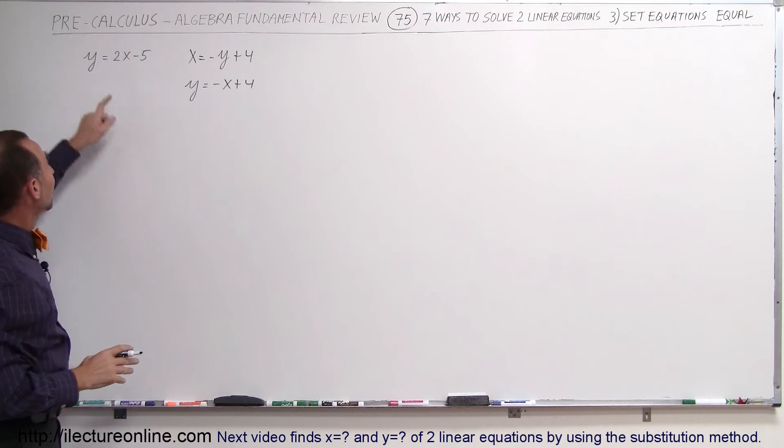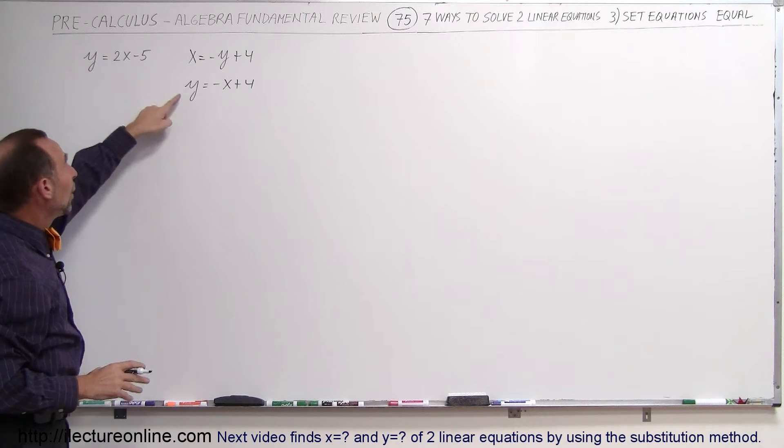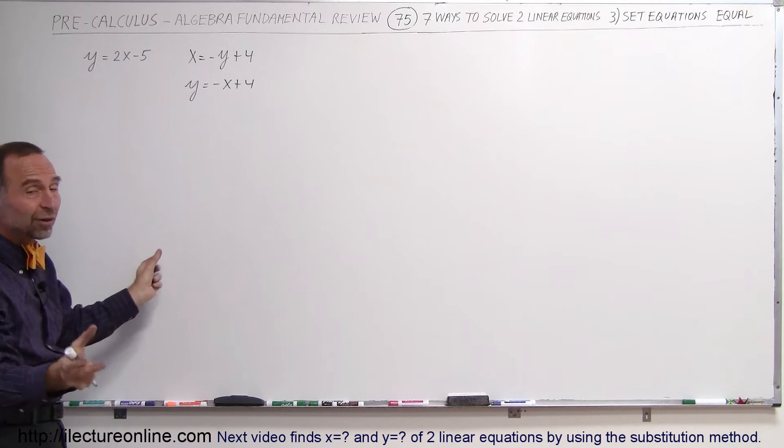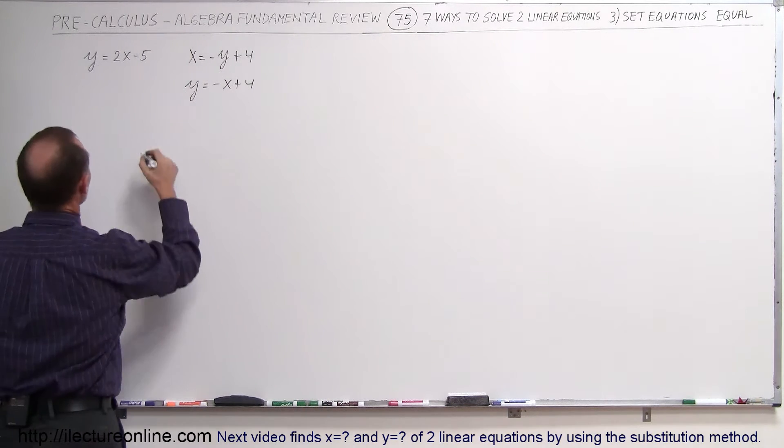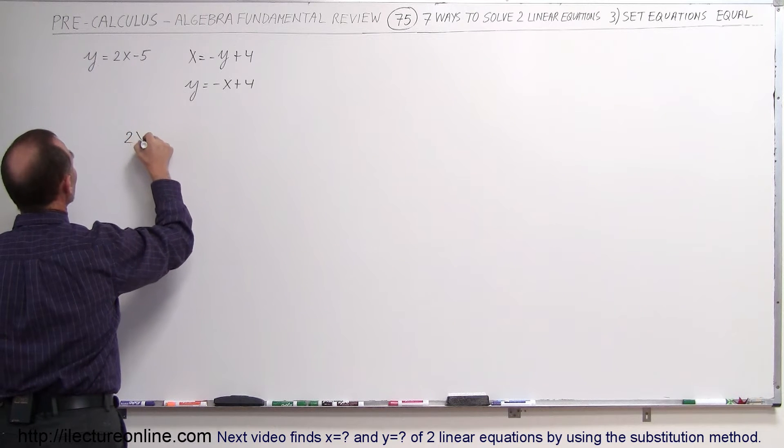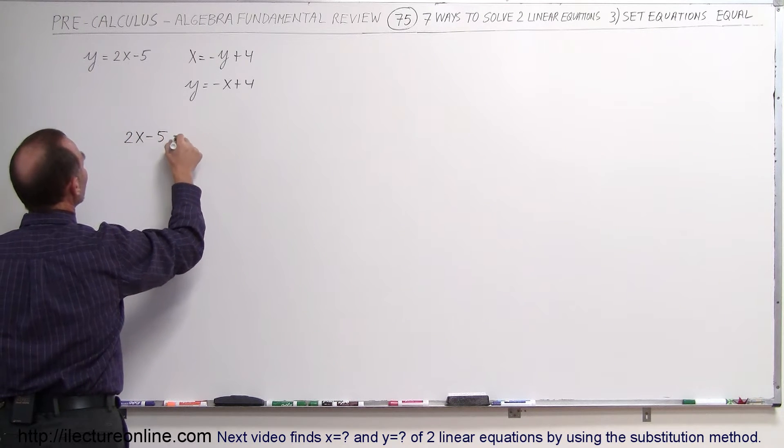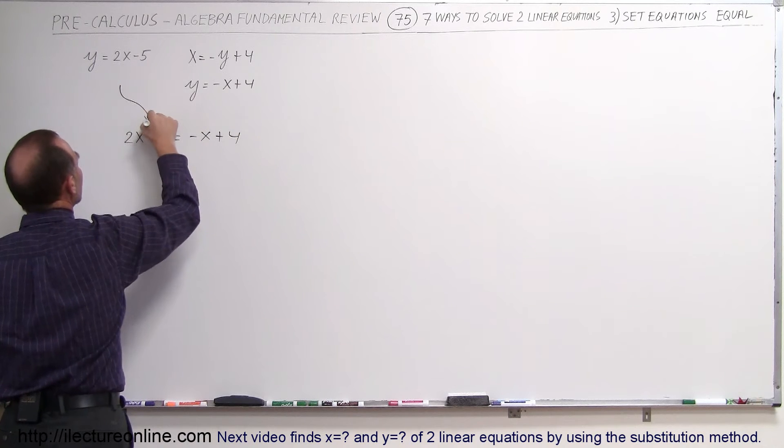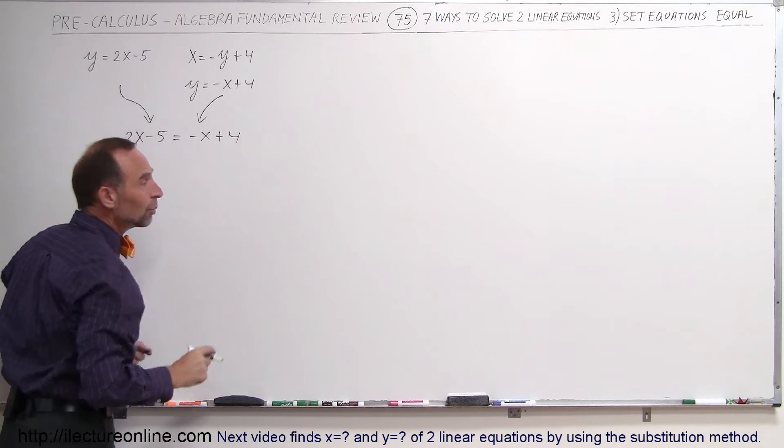So that means if y is equal to this and y is equal to that at the same time, that must be the place where the two lines cross. I can set the two equations equal to each other, which means I can say that at that point where the two lines cross, 2x minus 5 must equal minus x plus 4. And that's what we mean by setting the two equations equal to each other.